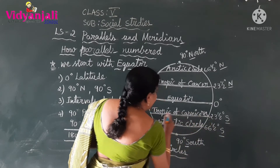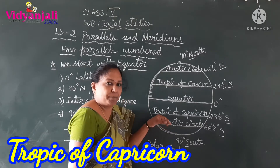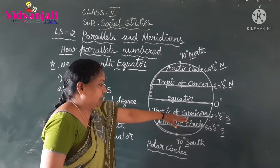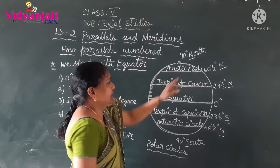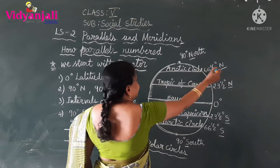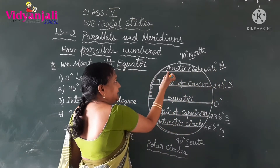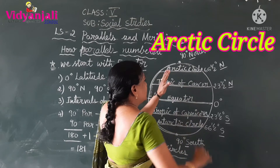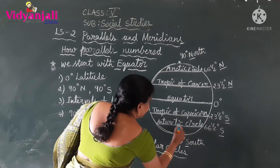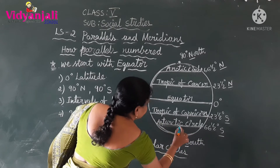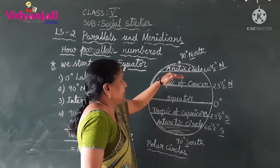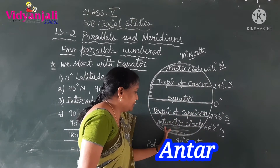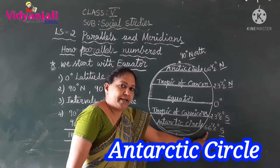From 23 and a half degrees to 66 and a half degrees, this line is located in another part of the globe. This line is called the Arctic Circle. The Arctic Circle is mostly covered with snow. Similarly, in the Antarctic region, this region is also covered with snow. The Arctic Circle is marked as 66 and a half degrees north, and in the southern part, this is known as the Antarctic Circle, marked as 66 and a half degrees south.